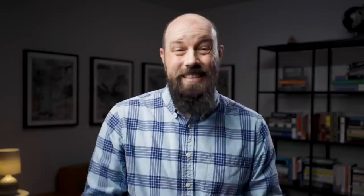The main question Brutus is attempting to answer is this: 'The first question that presents itself on the subject is whether a confederated government be the best for the United States or not.' A confederated government is the kind of government the United States had under the Articles of Confederation — the states had all the power and the central government had very little. In fact, you might say there were 13 governments in the early United States, one for each state, loosely tied together by a weak central authority.